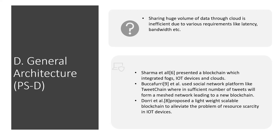The increasing capabilities of IoT devices and the large production of data are shifting computing models from centralized cloud-based platforms towards the network edges of IoT. Cloud-based platforms are considered inefficient to satisfy future requirements when higher volumes of data need to be transmitted to remote clouds, since this incurs high latency, consumes bandwidth, and requires complex processing — and so blockchain technology comes in handy. Sharma presented a blockchain integrating FOG, IoT devices, and clouds. Bufari used social network platforms like TweetChain, where sufficient tweets form a meshed network leading to a blockchain. Dori proposed a lightweight, scalable blockchain to alleviate resource scarcity in IoT devices.